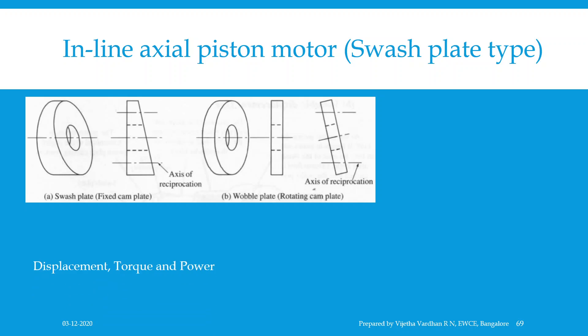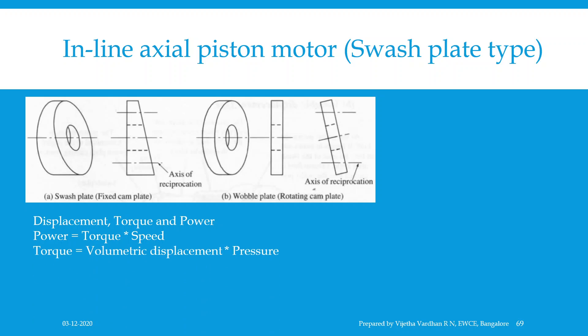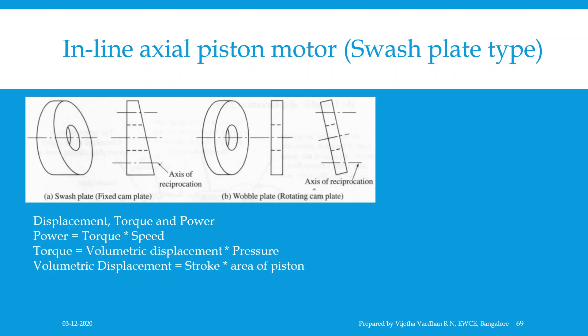Coming to the concept of displacement, torque, and power: power is equal to torque × speed, and torque is the product of volumetric displacement and pressure, while volumetric displacement is stroke × area of the piston. For a given piston, its area is constant; hence torque and power are directly proportional to the stroke. The displacement of a motor is the volume of oil required for one revolution of the motoring element, usually in m³/rev, denoted by Vd. If the stroke length is fixed, such motors are called fixed displacement motors. If the stroke length can be varied, they are called variable displacement motors.